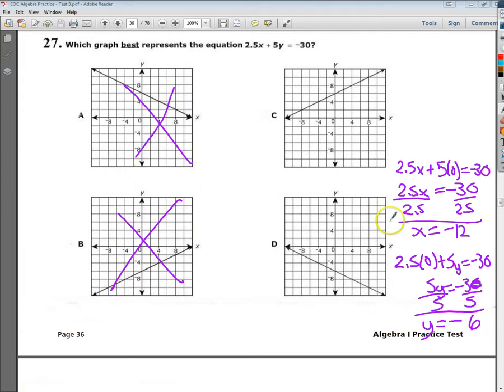So what I'm left with is one of these two. I also know that it has to have an intercept with the y-axis at negative 6. So I want to have something like right down in here, and something right here. So that is my answer. My answer to number 27 is D. That's using the intercepts method.